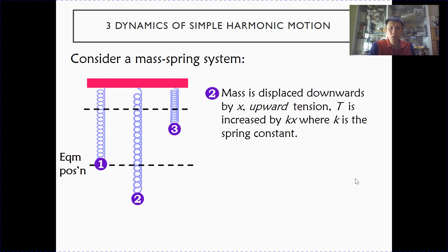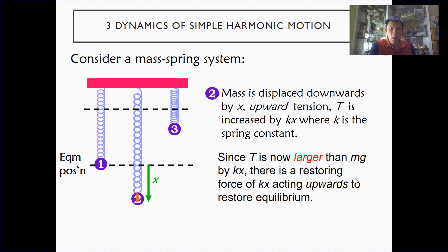At position two, when the mass is displaced downwards, the tension is increased by a value of kx, where k is the Hooke's constant or spring constant. So now tension is larger than the weight mg by a value of kx. That means there is a net restoring force of kx acting upwards.